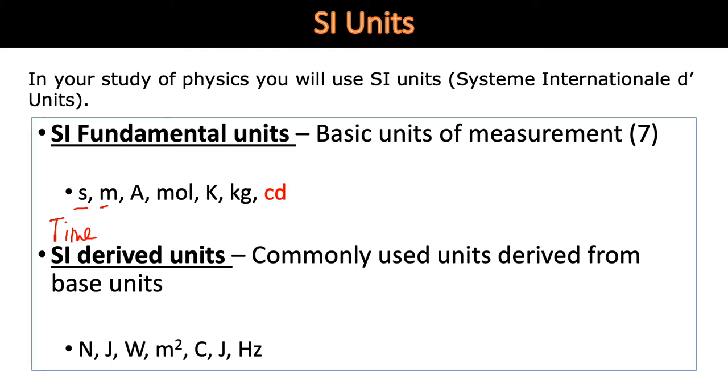We also have metres, the quantity is length, amperes or amps for electrical current. One that's often used in chemistry and also the gas laws, this is the amount of a substance as measured in moles. So that's where we use Avogadro's constant. We have a unit of thermodynamic temperature, which is Kelvin. We have kilograms, the quantity of course being mass. And we have one here which we're not going to use at all actually, it's candela, which is a unit for luminosity.